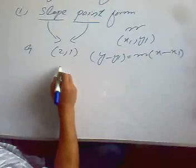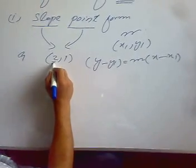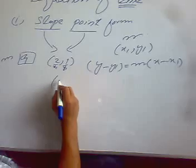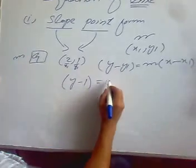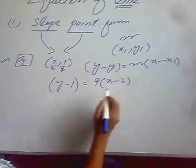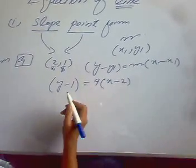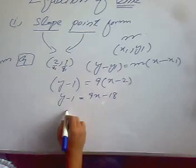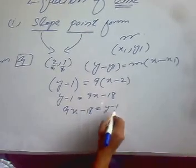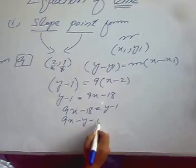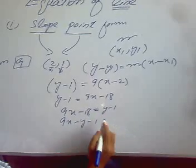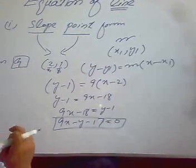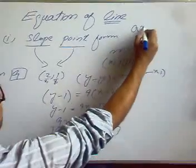The known values will be x1, y1, and the slope m. Putting the values: y minus 1 equals 9 times x minus 2. Multiplying and arranging: y minus 1 equals 9x minus 18, so 9x minus y minus 17 equals 0. This is our required equation of the line. Whenever we write the equation of a line, we write it in the form ax plus by plus c equals 0, so we arrange terms in that order.